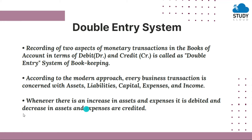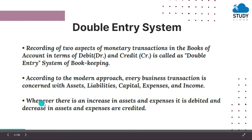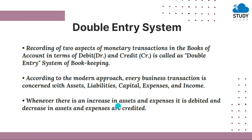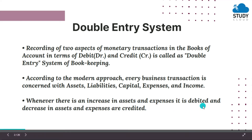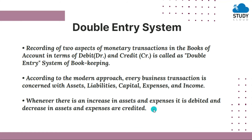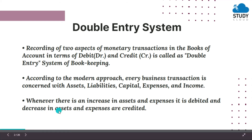There is one rule here: whenever there is an increase in assets and expenses, it is debited. When you acquire assets or their value increases, or when expenses are incurred, you write it on the debit side. When there is a decrease in assets or a decrease in expenses, all those things are credited.